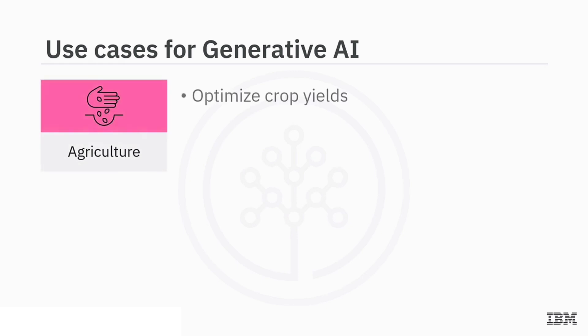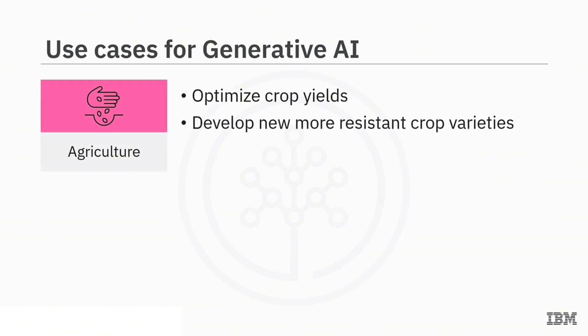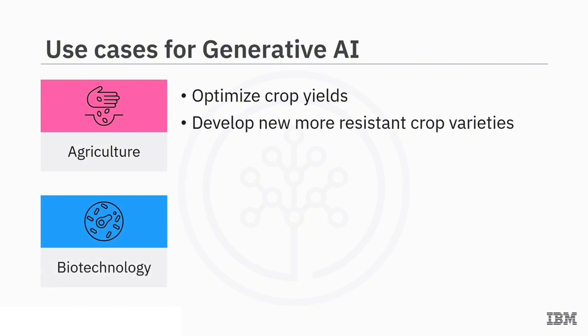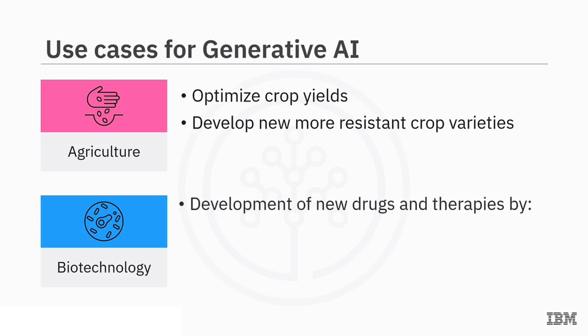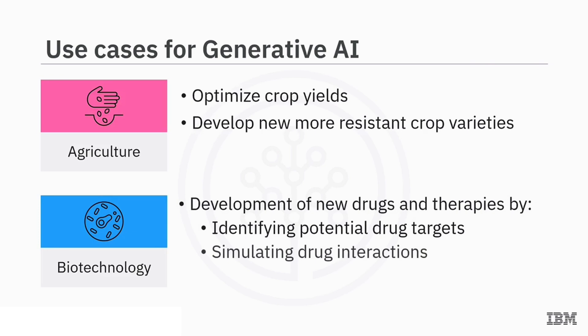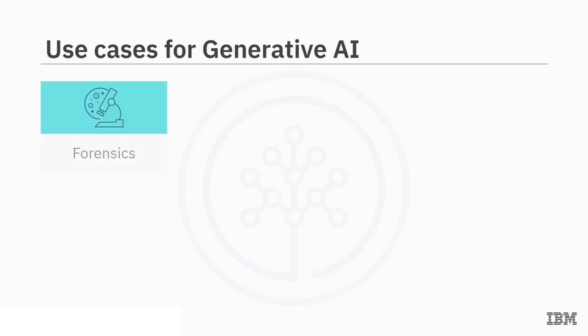In agriculture, generative AI can optimize crop yields and create more robust plant varieties that can withstand environmental stressors, pests, and diseases. In biotechnology, generative AI can aid in the development of new therapies and drugs by identifying potential drug targets, simulating drug interactions, and forecasting drug efficacy.